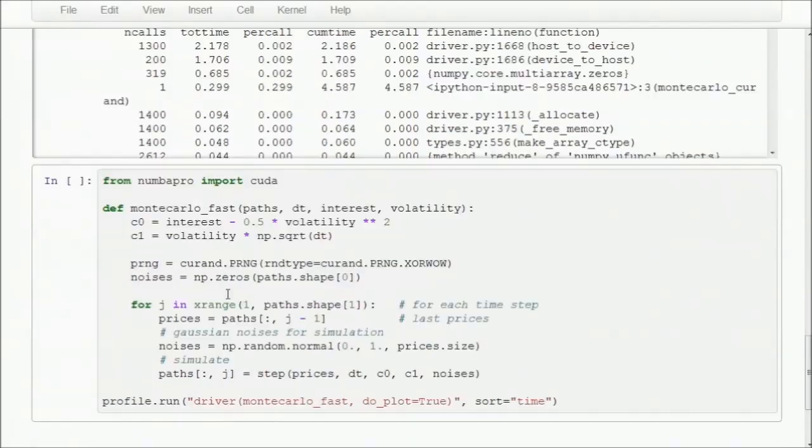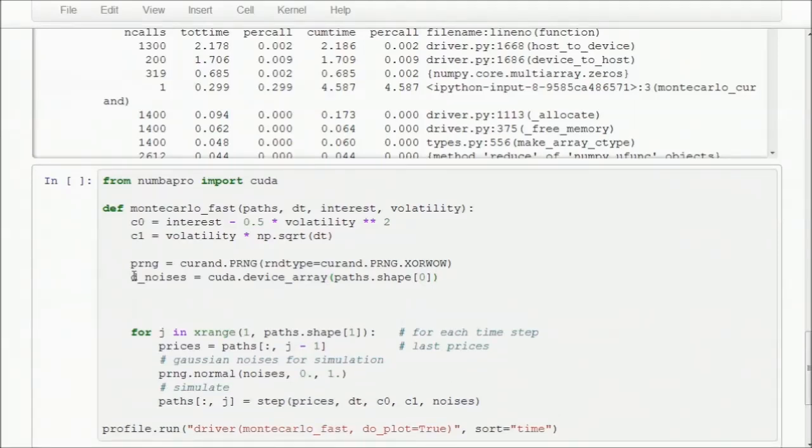Now we need to change the noises array to be allocated in GPU memory. I like to add a d underscore to the start of a variable so I know it's referring to GPU memory. We'll then use the CUDA device array call to allocate space on the GPU. D underscore noises now points to an array allocated in GPU memory. For the prices data, we'll be using two buffers on the GPU. One is used to hold the current set of prices, and one is used to store the next set of generated prices. So let's allocate those now.